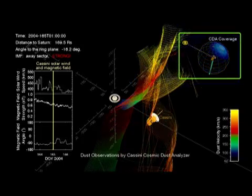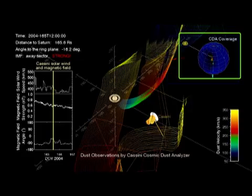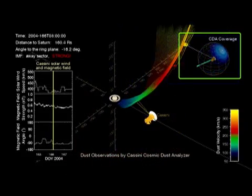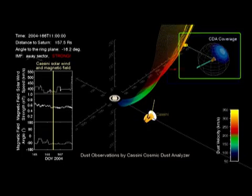During this period, many dust impacts are detected, as indicated by the numerous red bars, when CDA points southward toward the predicted direction of the Saturnian dust streams.